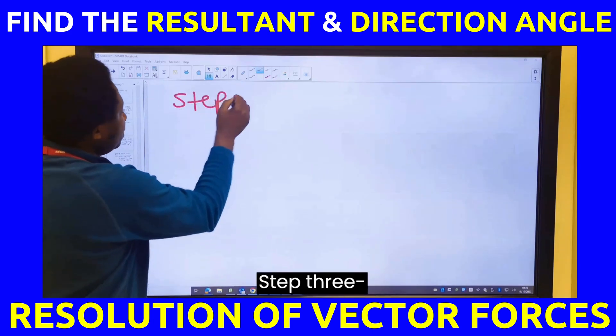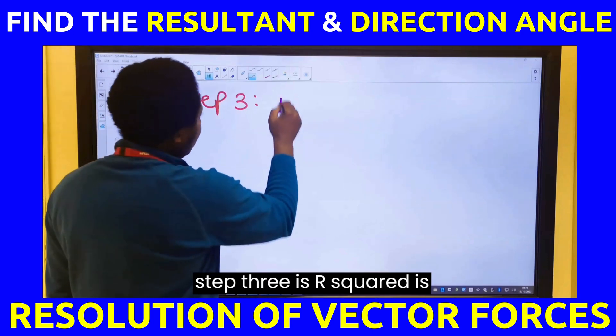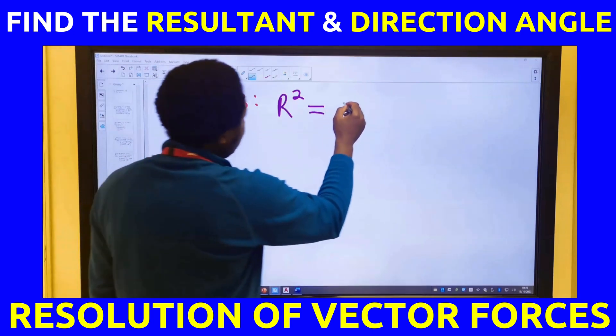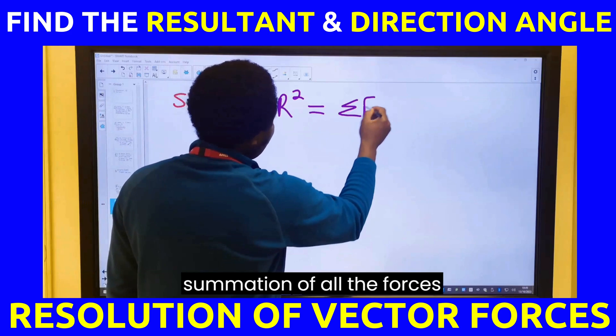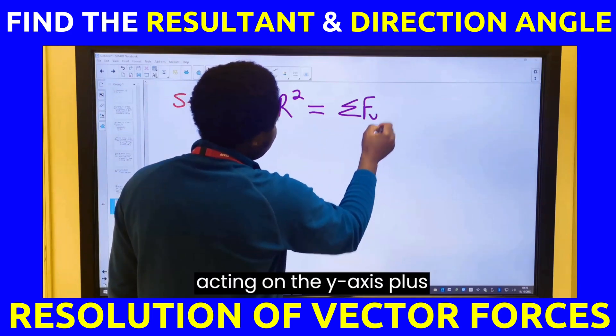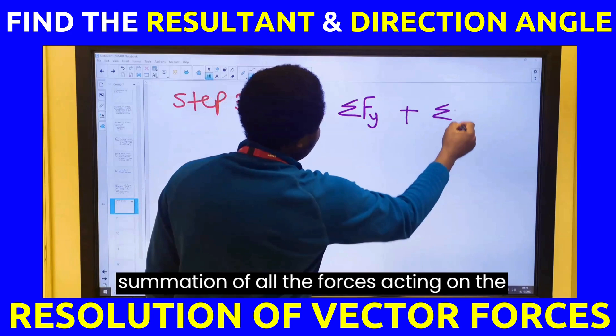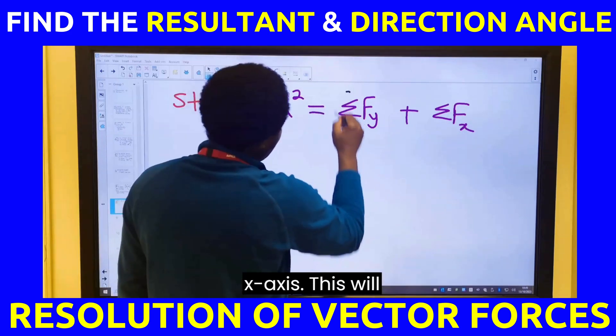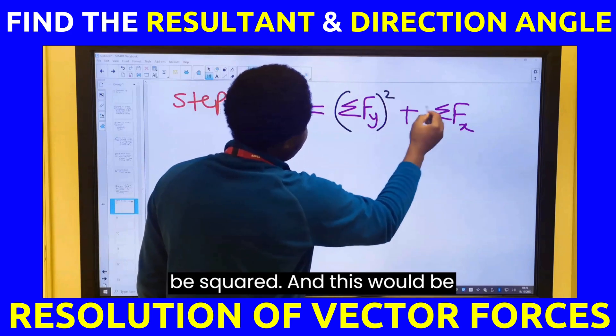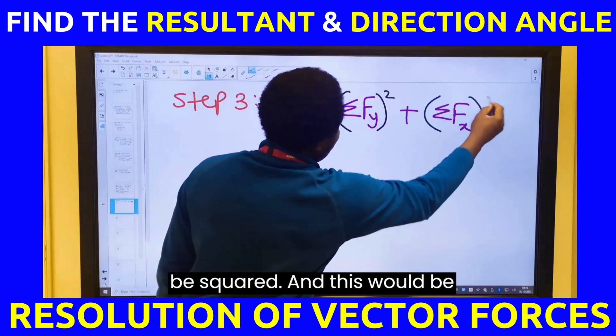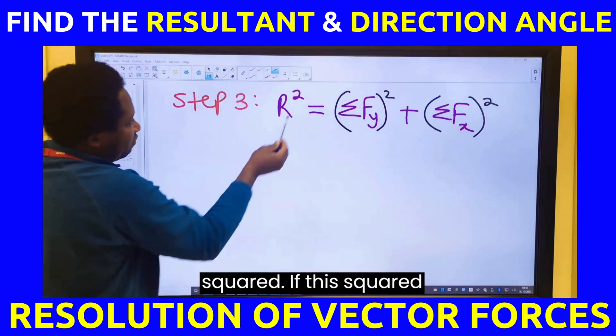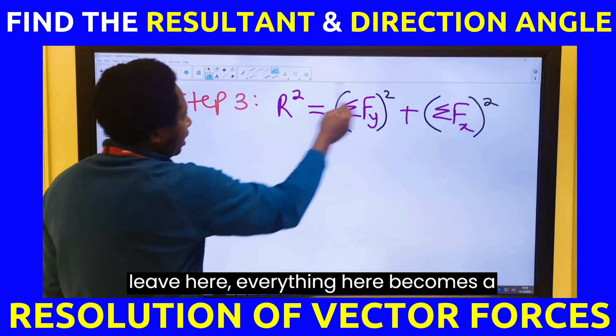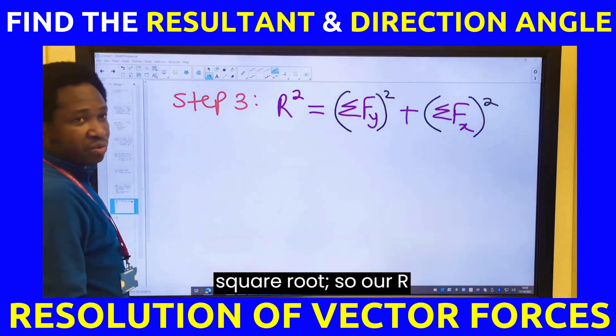Step 3. Step 3 is R squared equals summation of all the forces acting on the y-axis squared plus summation of all the forces acting on the x-axis squared. If this squared lives here, everything here becomes a square root.